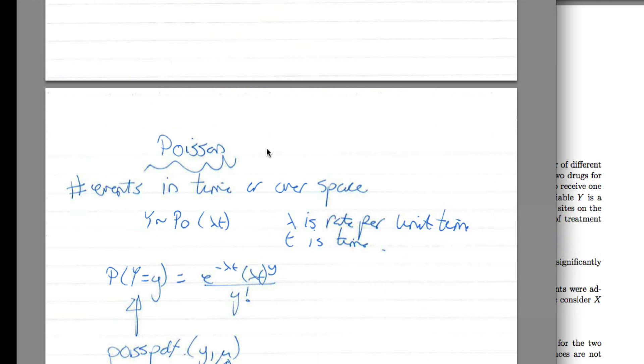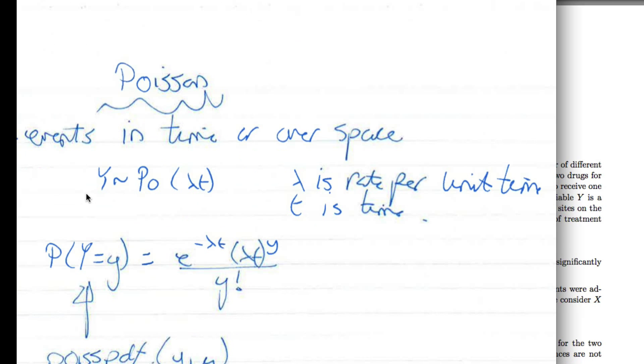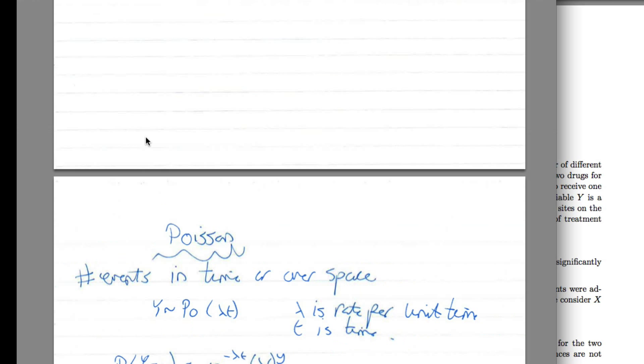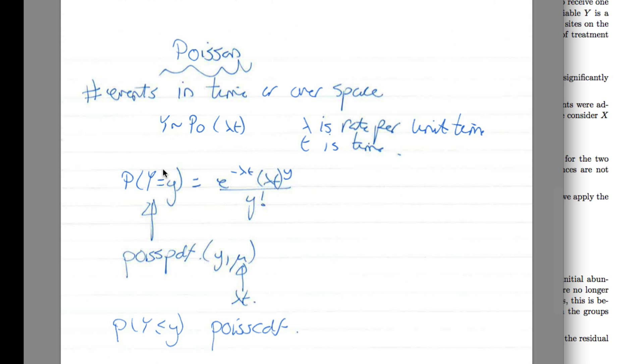If I go to my cheat sheet, we've got events per unit time. My problem—we've got events in time, in this case. That's right, and we're told it's Poisson. We've got our lambda t, so we've got our rate per unit time times by t. We've done all that. Here's my probability mass function.